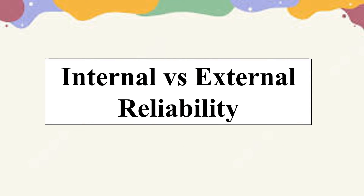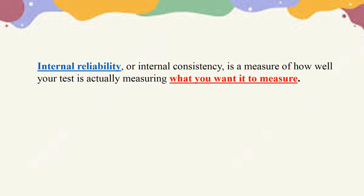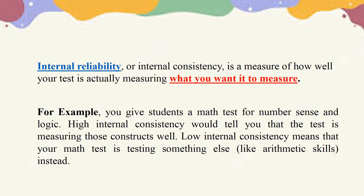Internal versus external reliability. Internal reliability, or internal consistency, is a measure of how well your test is actually measuring what you want it to measure. For example, you give students a math test for number sense and logic. High internal consistency would tell you that the test is measuring those constructs well. Low internal consistency means that your math test is testing something else, like arithmetic skills, instead.